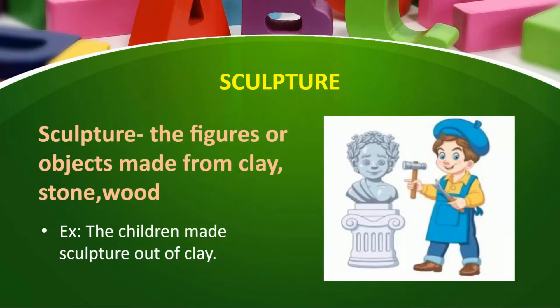Next is sculpture. Sculpture means art — in simple words, sculpture is the art of making figures or models. Sculpture means the figures or objects made from clay, stones, wood, or metal. For example, the children made sculpture or art out of clay. In simple words, sculpture means the art of making figures or models.